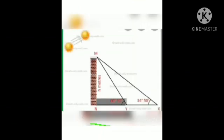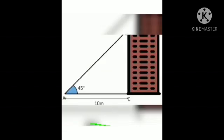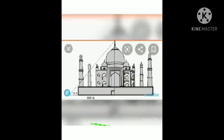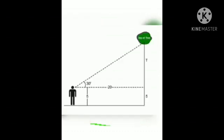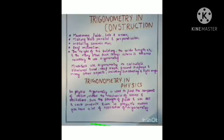Trigonometry in real life: trigonometry measures the height of buildings. If you know the distance from where you can observe the building and the angle of elevation, you can easily find the height of a building. Similarly, if you have the value of one side and the angle of depression from the top of a building, you can find the other side of the triangle. All you need to know is one side and an angle.